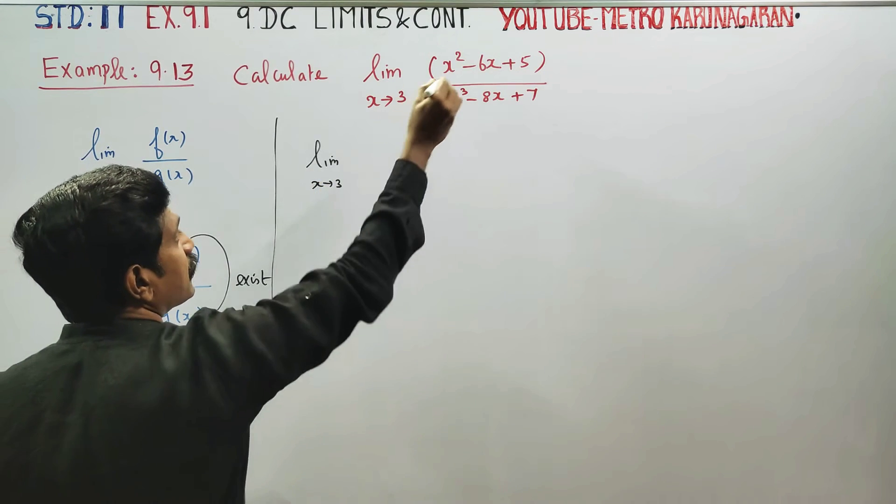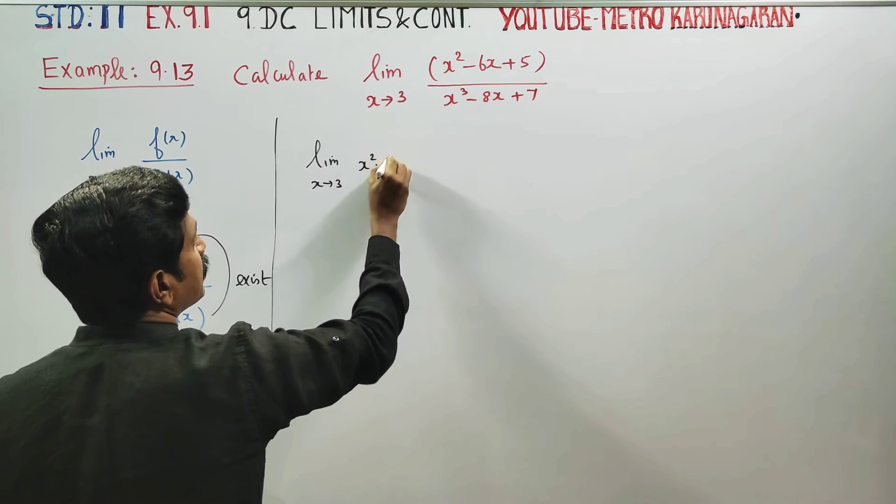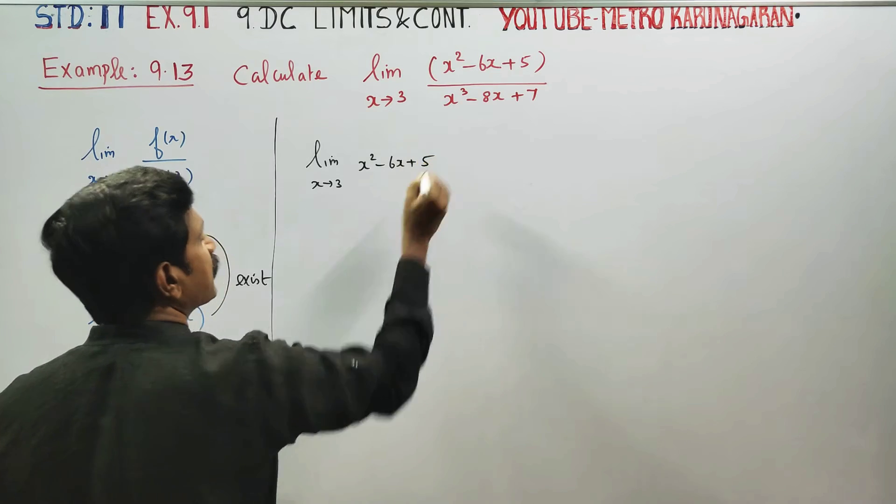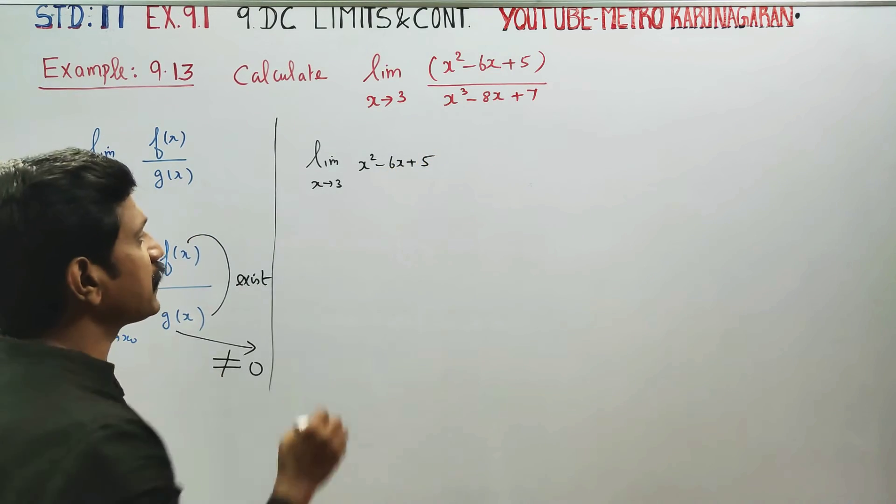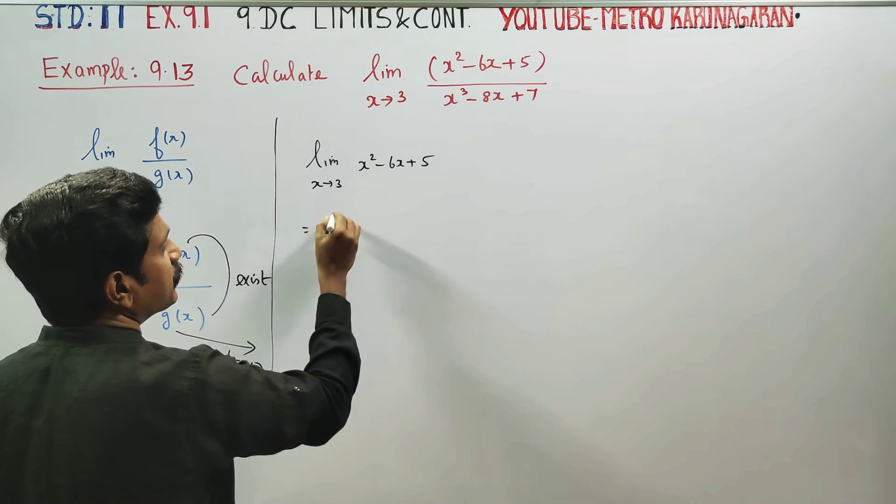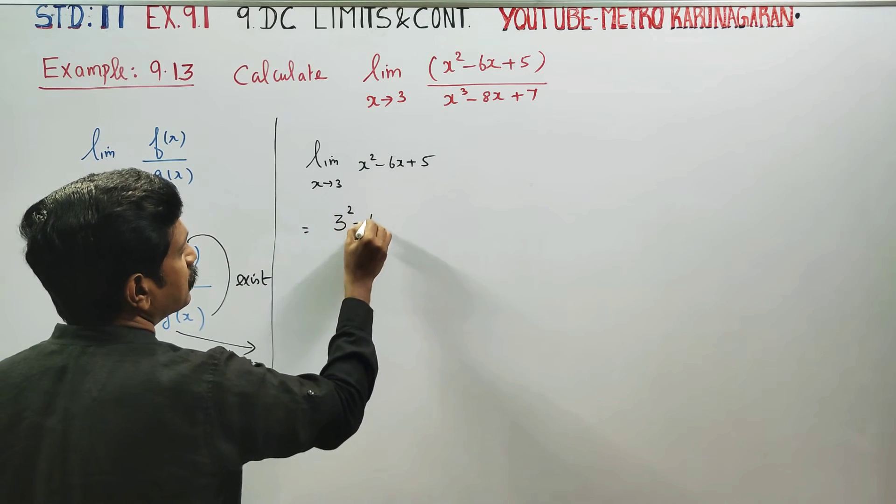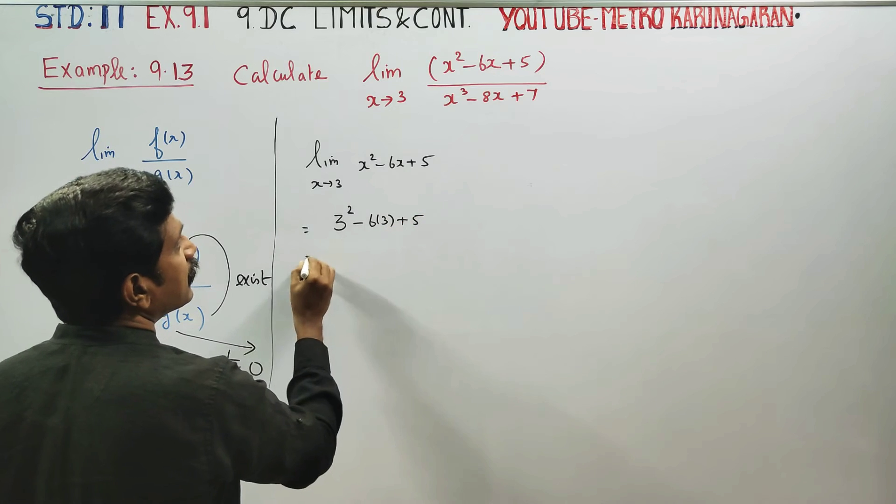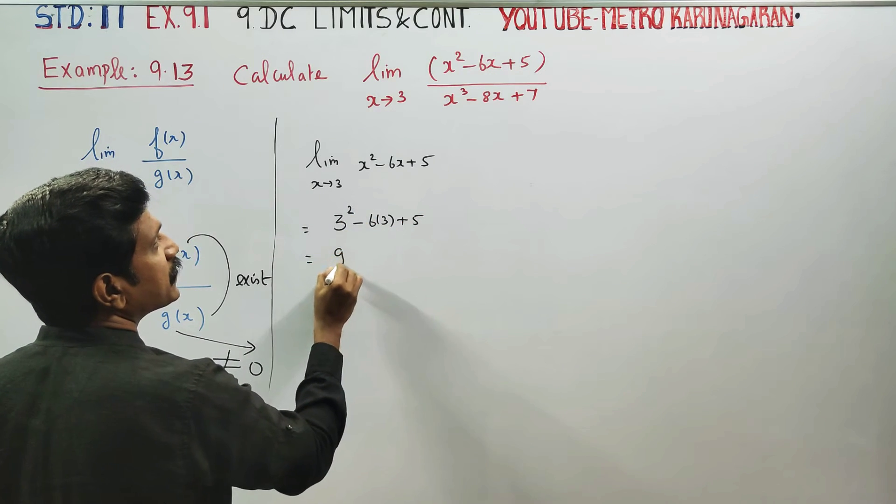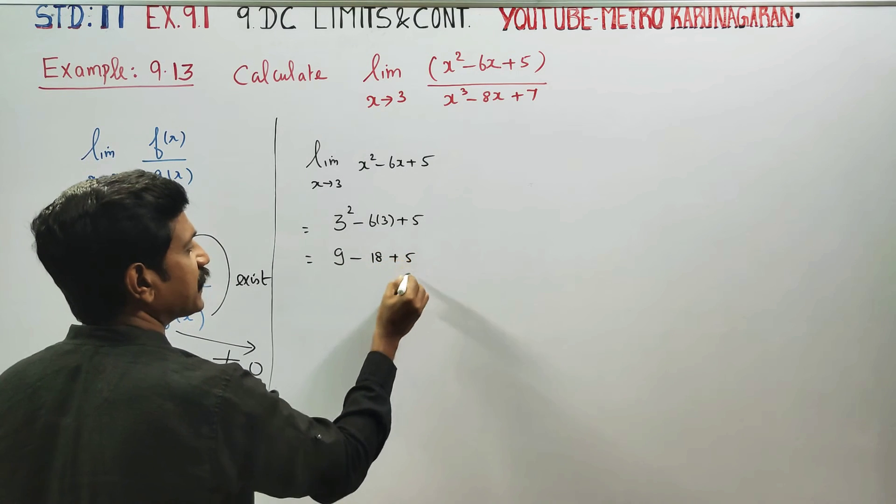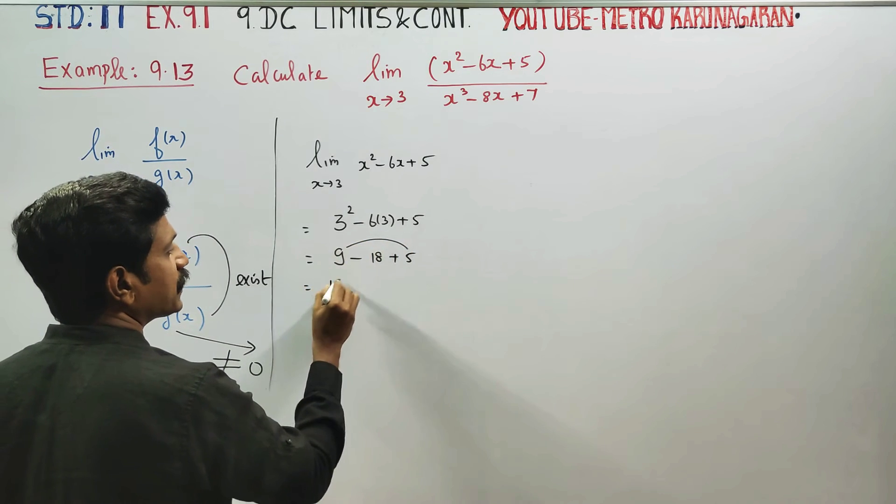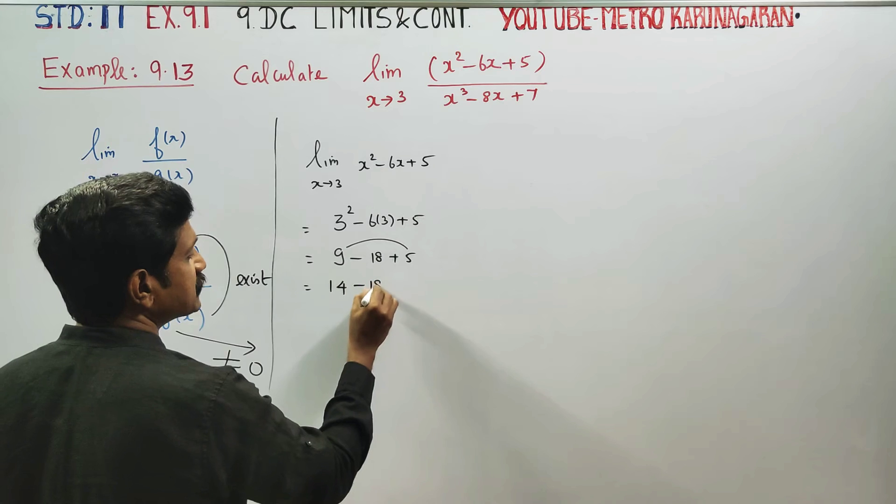As x turns to 3, we have x² - 6x + 5. Since it's a polynomial, we directly substitute 3. So 3² - 6×3 + 5. Three squared is 9, minus 6×3 is 18, plus 5. You'll be getting 14 - 18.